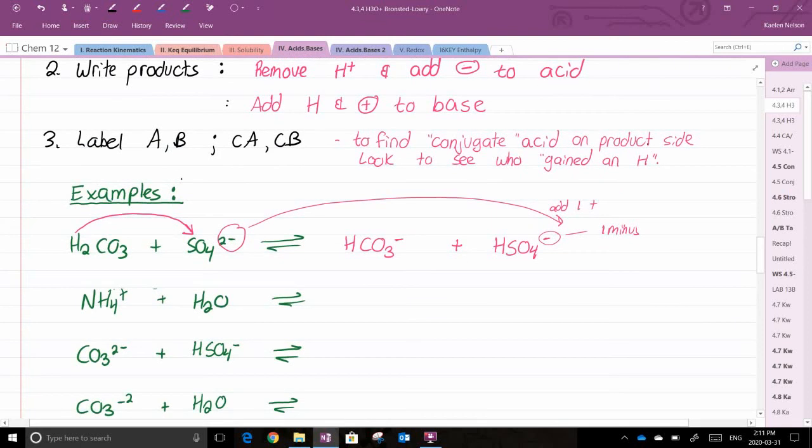If I look at my second example, NH4+, I can see that this guy's got an extra H. It is going to donate it. Acids are proton donors. So I'm going to donate its H, and it's going to remove it. So NH3, I've taken the H off, and H3O+.